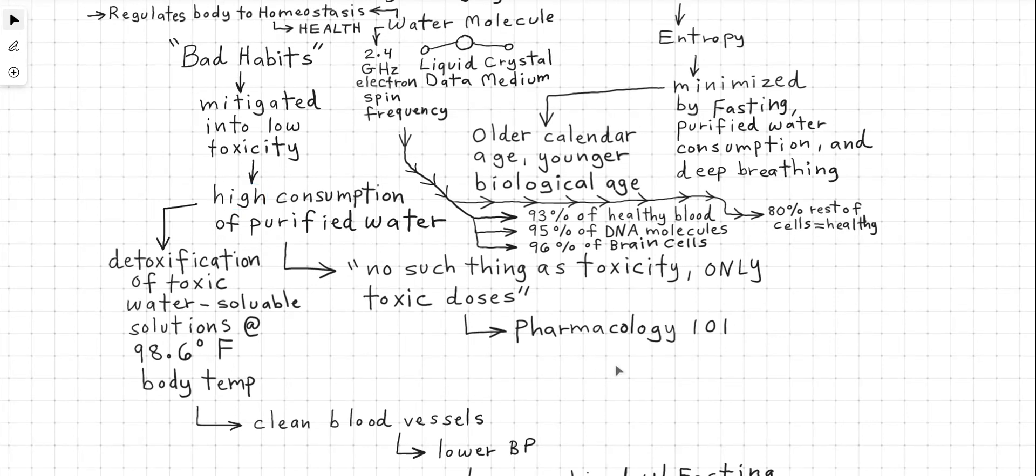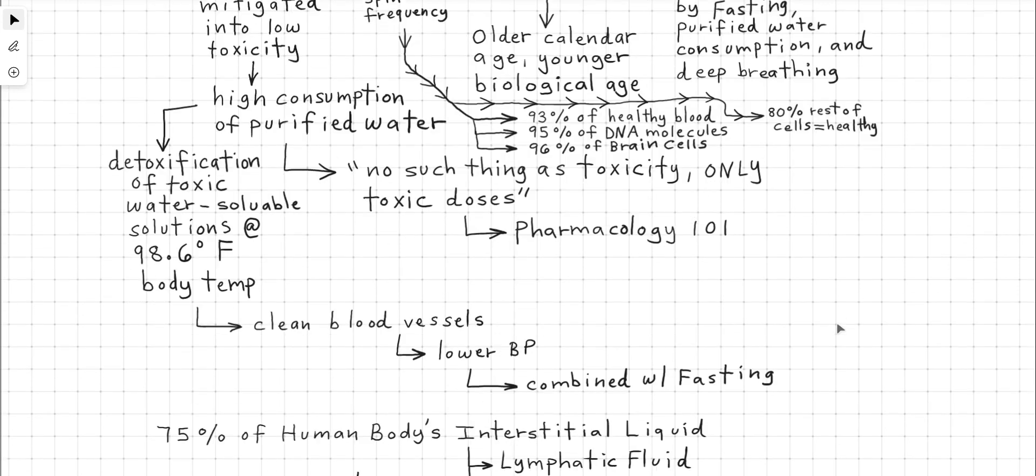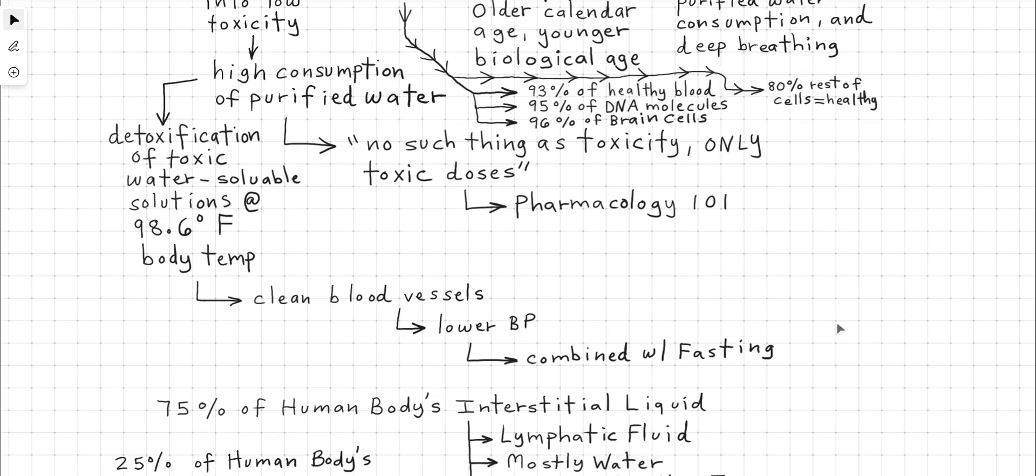If you have a few bad habits, you can actually get away with them by compensating through consuming large amounts of purified water. In pharmacology 101, it is understood that there is no such thing as toxicity, only toxic doses. This toxic dose of water soluble toxins is mitigated into low toxicity through high consumption of purified water. That's the simple answer to health and well-being. Keep your psychology under control and keep your purified water hydration optimized in high levels.